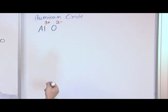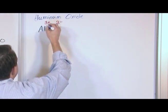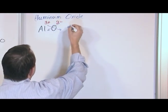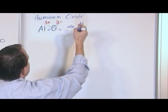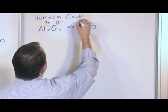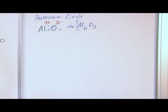We do the same thing. We crisscross. The final answer is Al2O3. The 2 goes with aluminum, the 3 goes with oxygen. That's the answer for aluminum oxide.